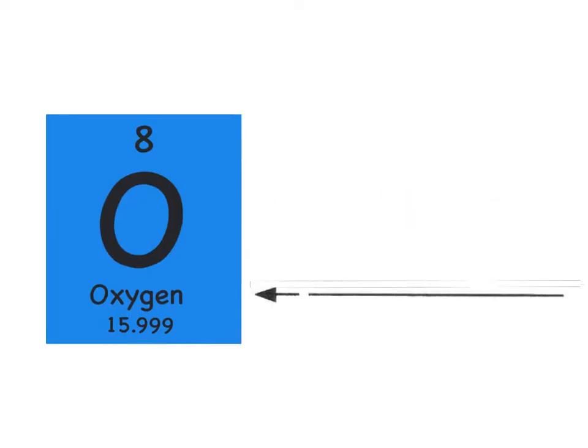Now underneath the element symbol is the element's name. It always begins with a capital letter and everything else is lower-cased. So on your note page, on the third line on the arrow that's pointing to the word oxygen, write 'element's name.'